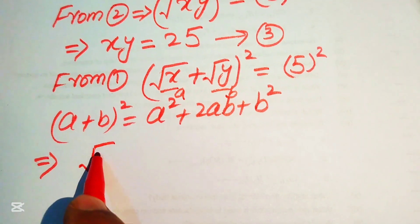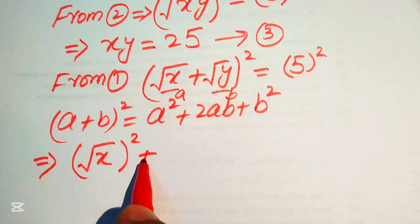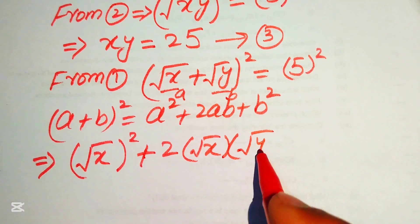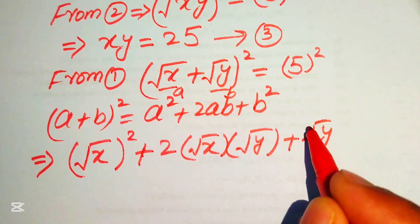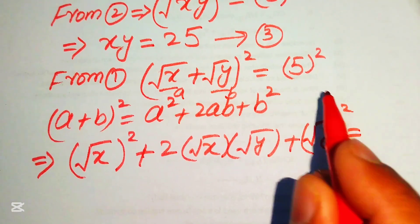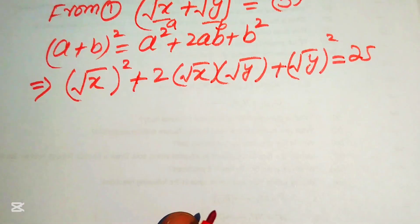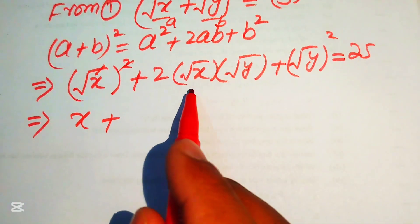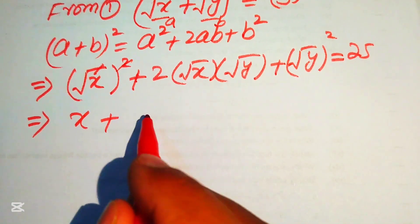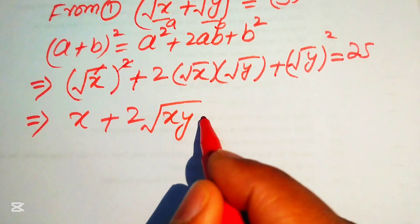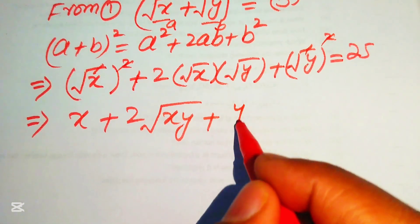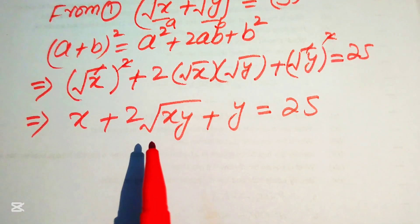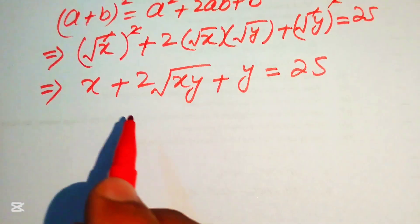Substituting into the formula: a squared gives x, plus 2 times square root of x times square root of y, plus b squared gives y, equals 25. Combining the square roots in the middle term gives 2 times square root of xy, so we have x plus 2 times square root of xy plus y equals 25.